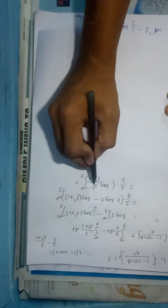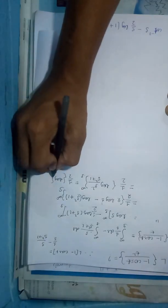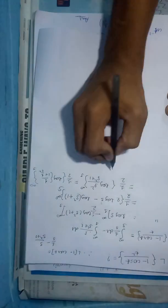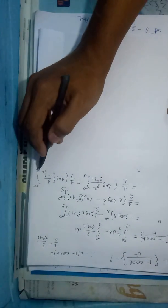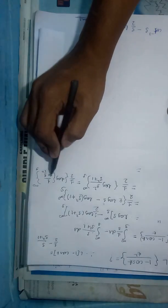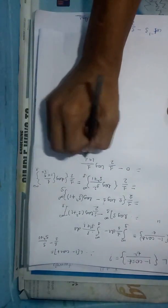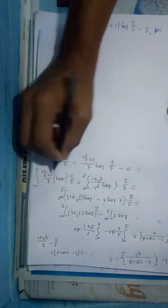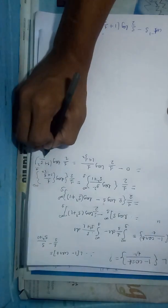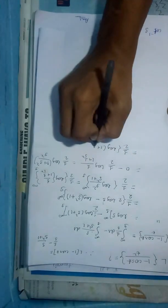We can write this as log[s²/(s² + 1)], with limit s to infinity. Taking s² common from numerator and denominator, s² cancels and as s → ∞ the log term becomes 0, so zero minus (1/2) log applied at lower limit s gives (1/2) log(1 + s²)/s², which we can write as (1/2)[log(1 + s²) − log s²].